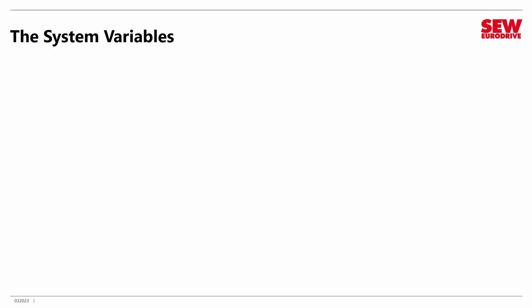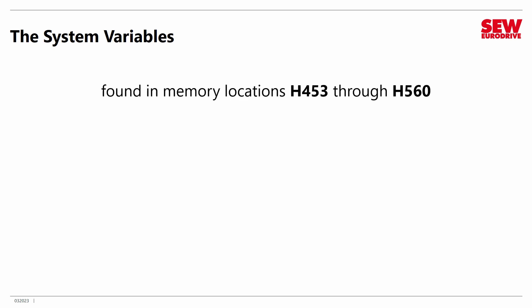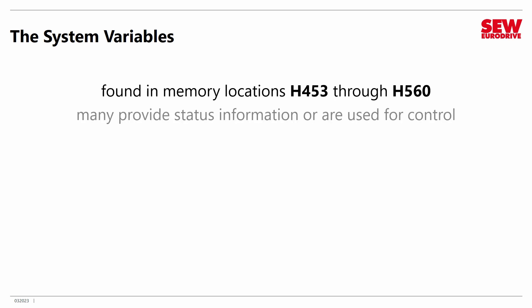We've talked about the system variables a number of times. Just a reminder: they're found in memory locations H453 through H560. They provide status information about the VFD, and some of them are used for controlling aspects of the VFD. There are quite a few of them in there. We're not going to cover them all by any means, but we will cover some of the most important ones.